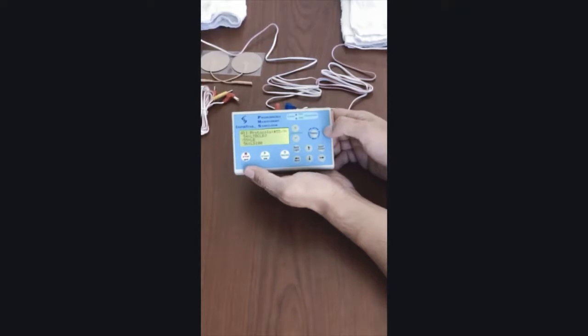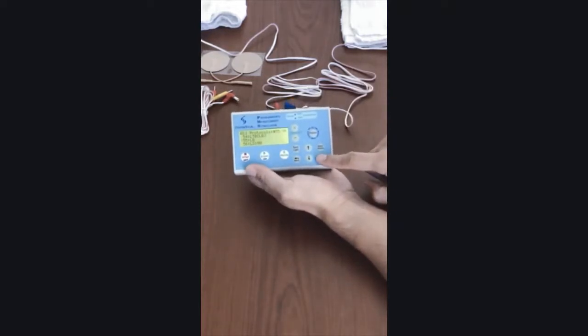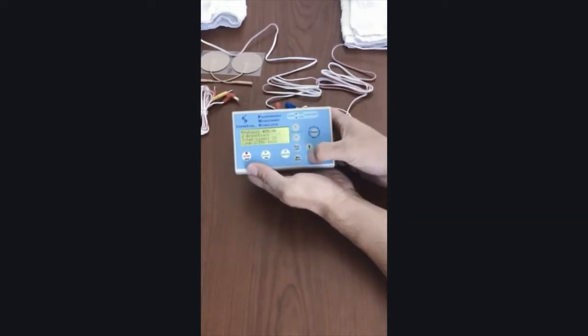You can see the details of a protocol by pressing the right arrow key to see the details. Use the up and down keys to scroll the screen to see the rest of the details of the protocol.